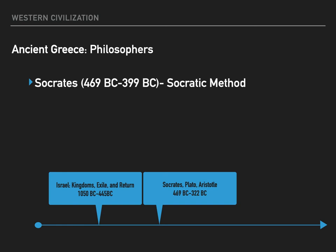We know Socrates from the writings of his student Plato. The Socratic method is asking questions to discover truth. Imagine you come home hours past curfew — your parents will be asking questions. But the pursuit of truth is dangerous: Socrates was executed by opponents of the truth. Before he drank the poison, he offered one more lesson. He said, 'The unexamined life is not worth living.'